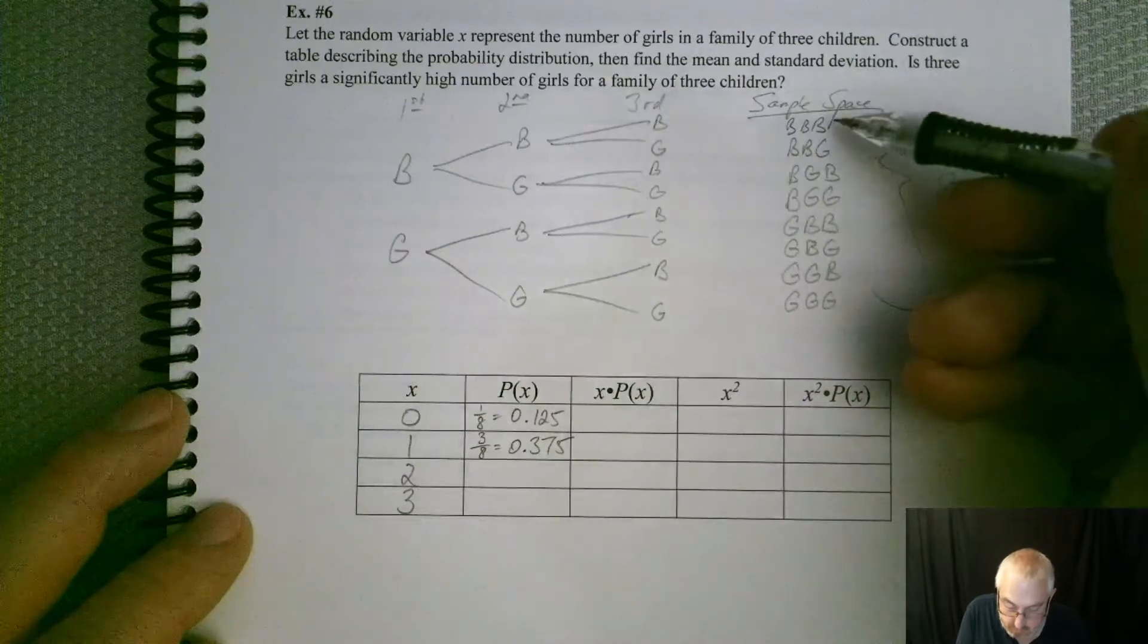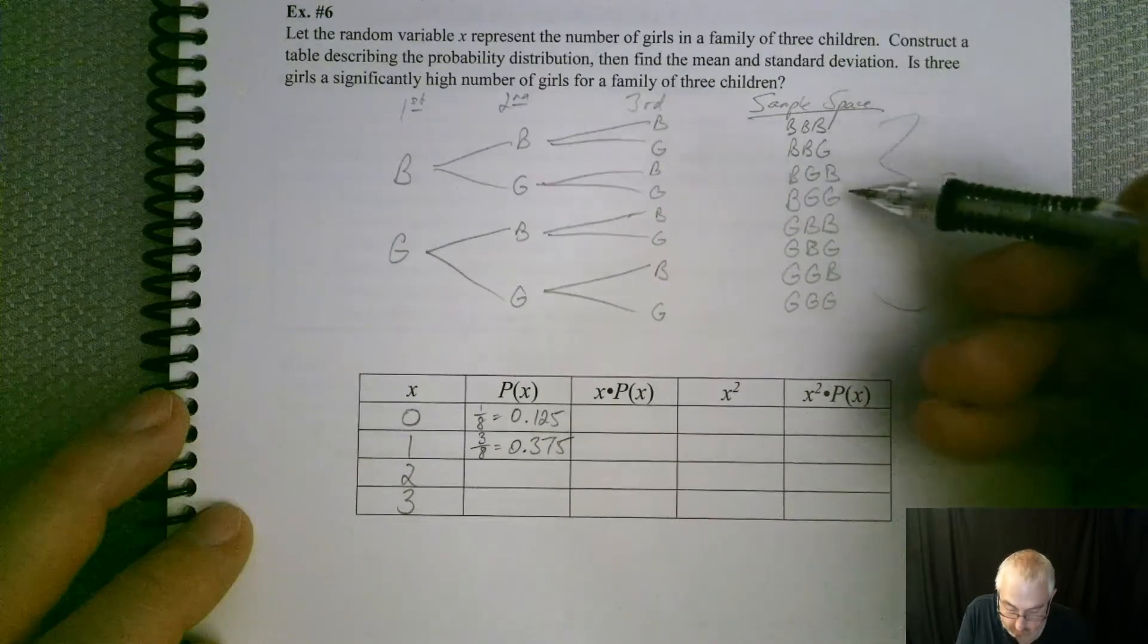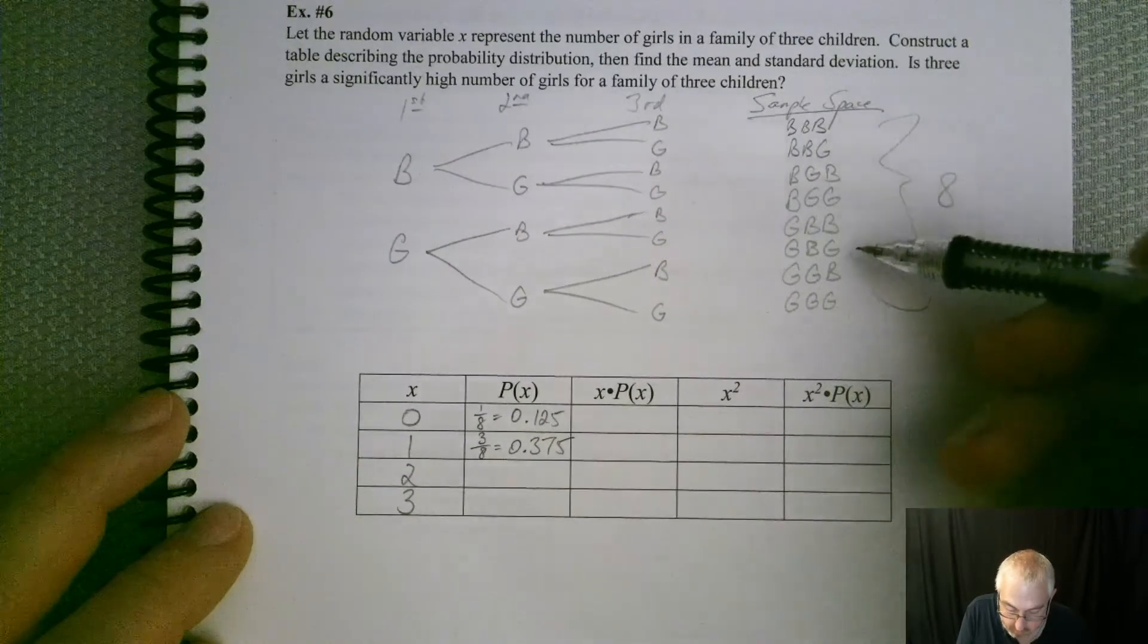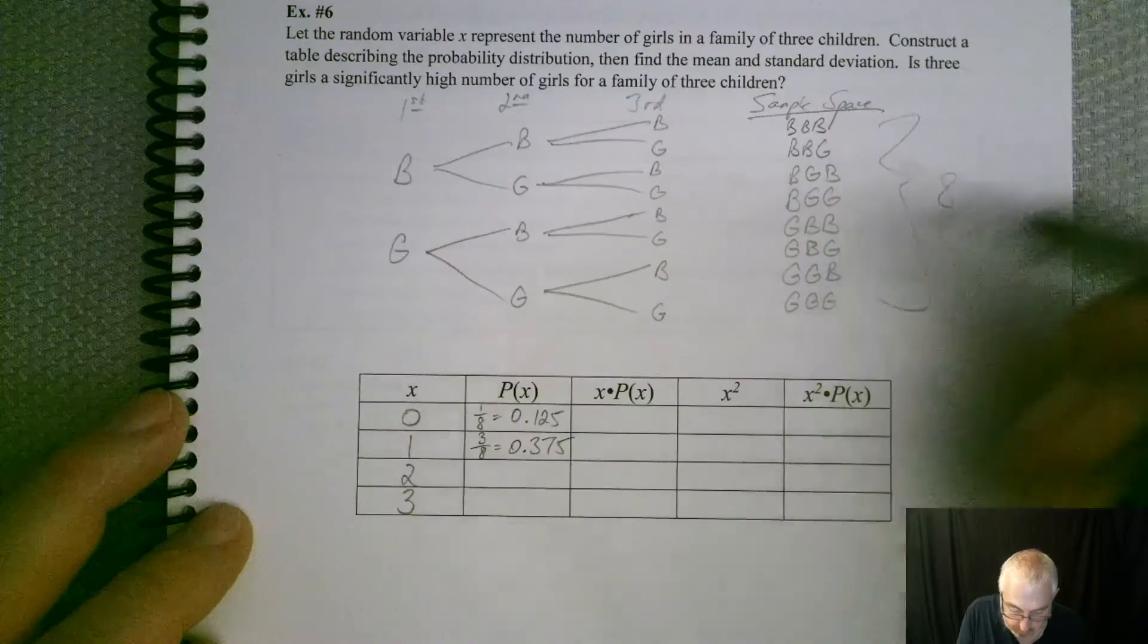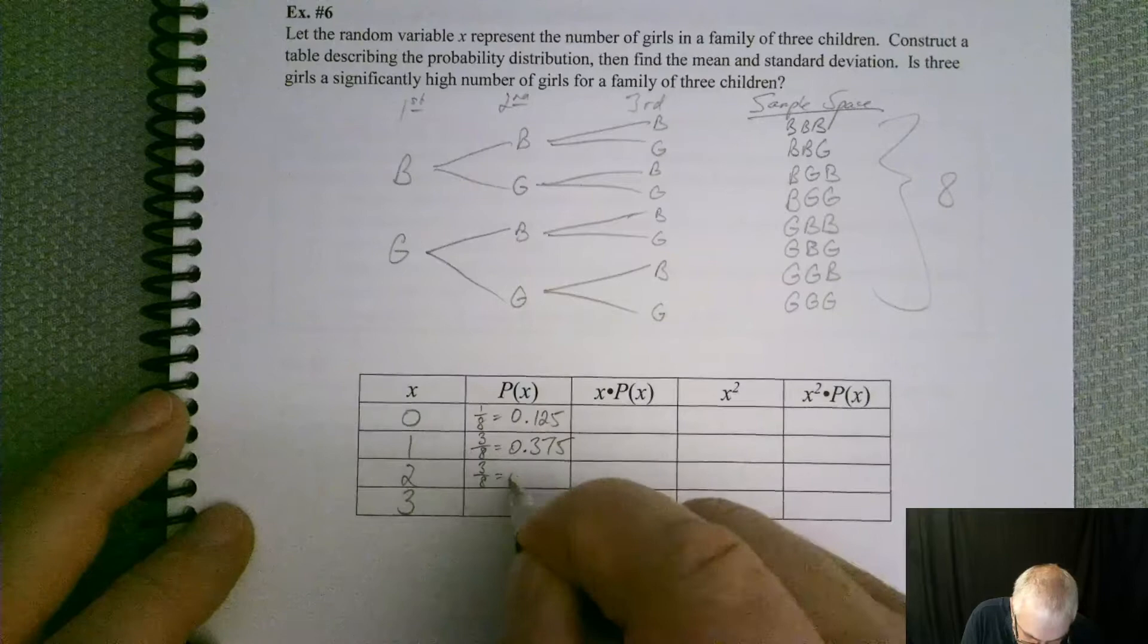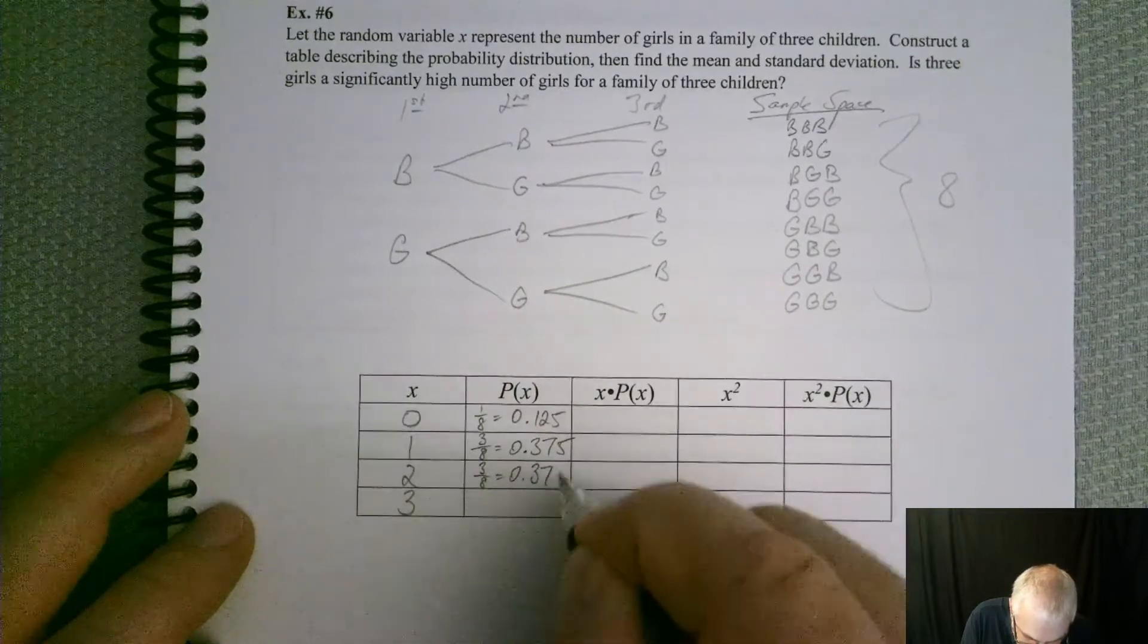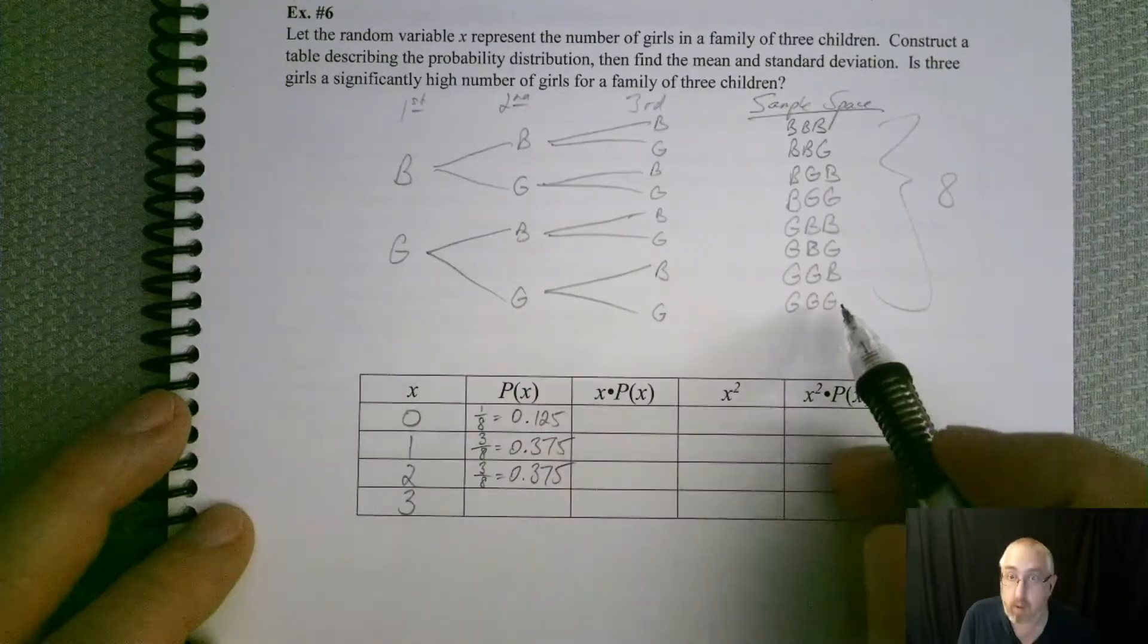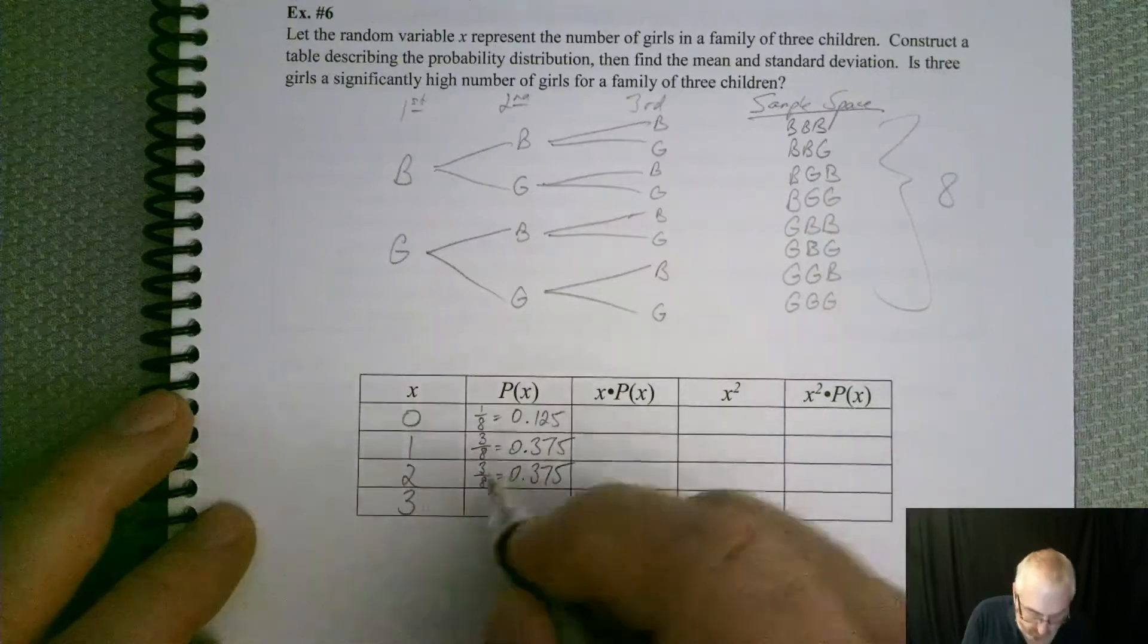Two girls. One here. Two. Three. Three-eighths again.